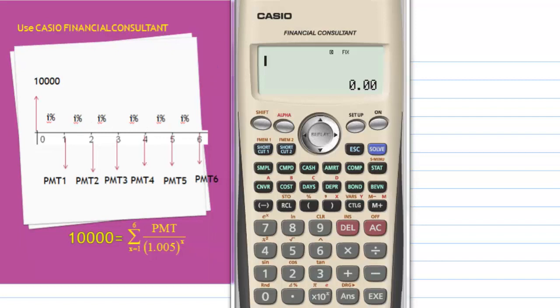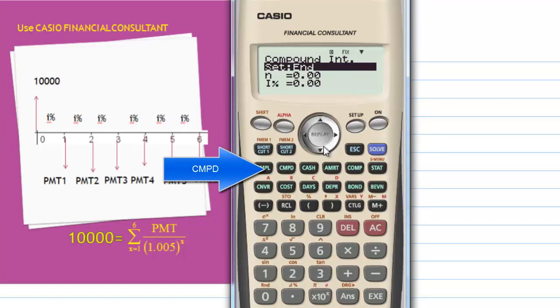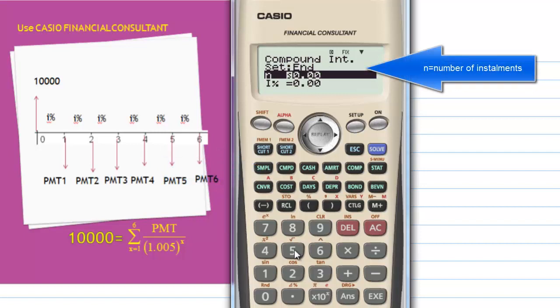If you have a Casio financial calculator, this is how you do it. First, you press CMPL for compound interest. Then let's go to N, the number of payments, which is 6.